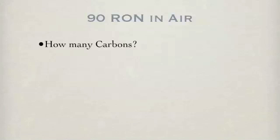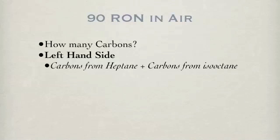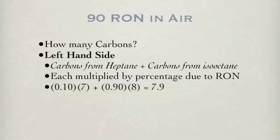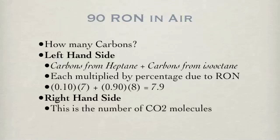To actually balance the equation of our example, we start with computing the number of carbons. On the left-hand side, the source of carbons is 90 RON primary reference fuel, meaning a mixture of 10% heptane and 90% isooctane. This means that the effective number of carbons is 7.9. Notice it's a number between 7 and 8 carbons. This has to balance the right-hand side. But the only carbons on this side are those from CO2, so there are 7.9 CO2 molecules produced.